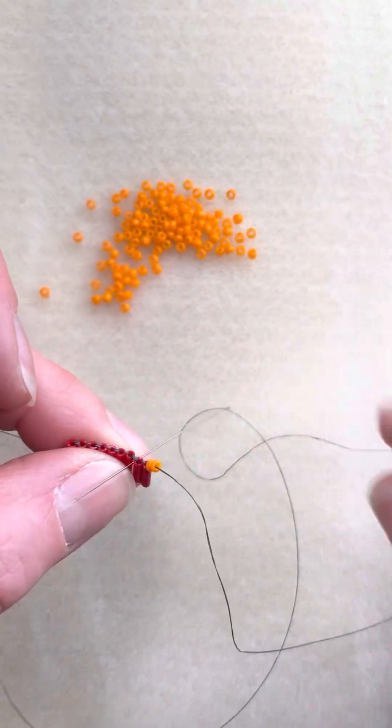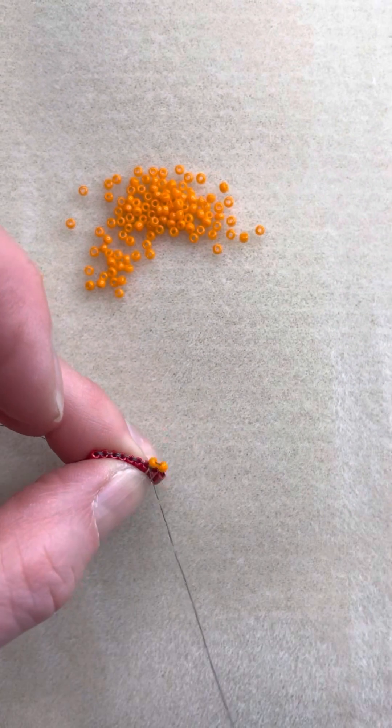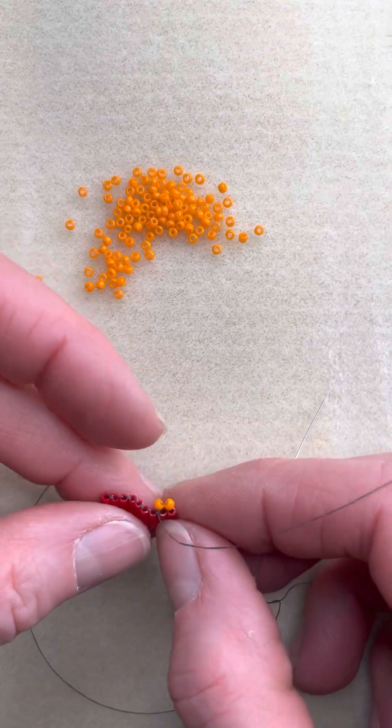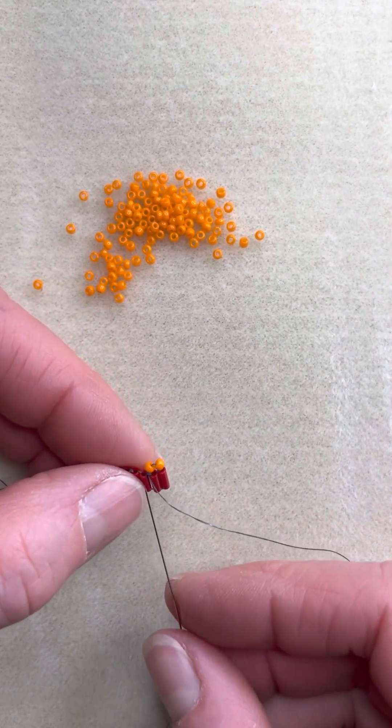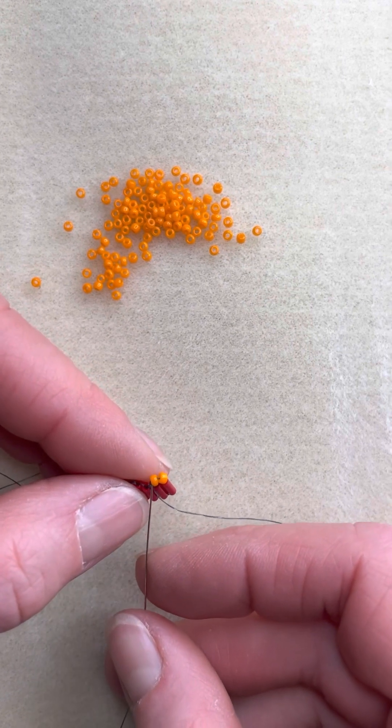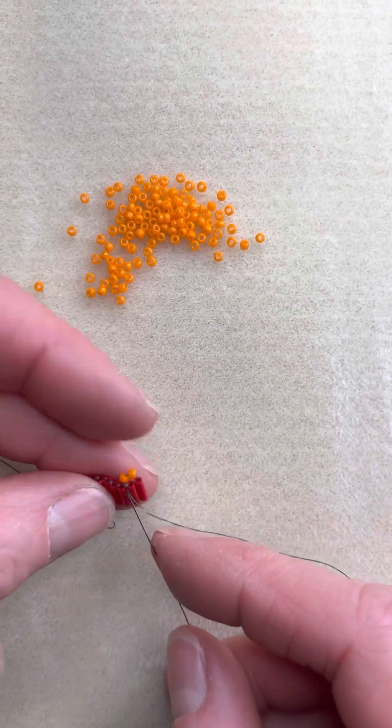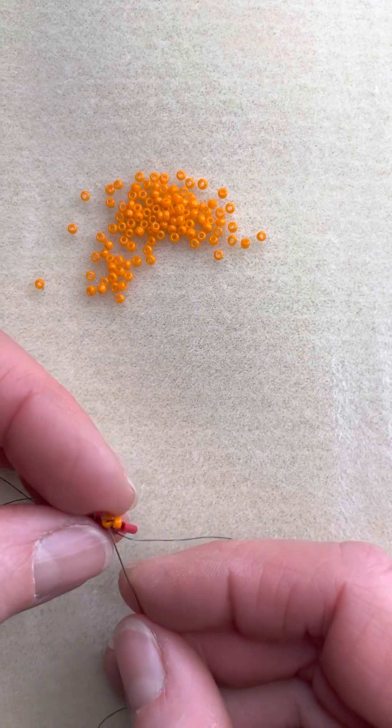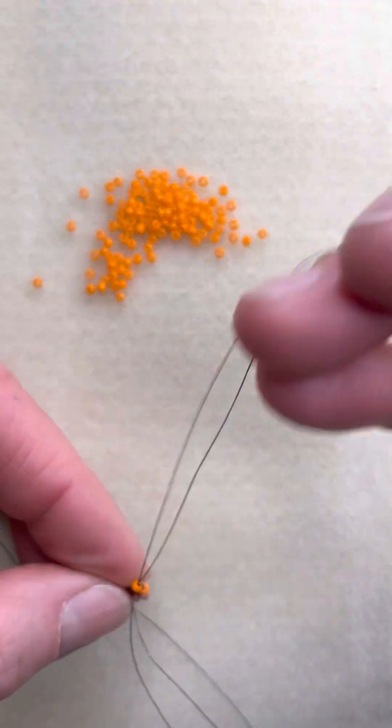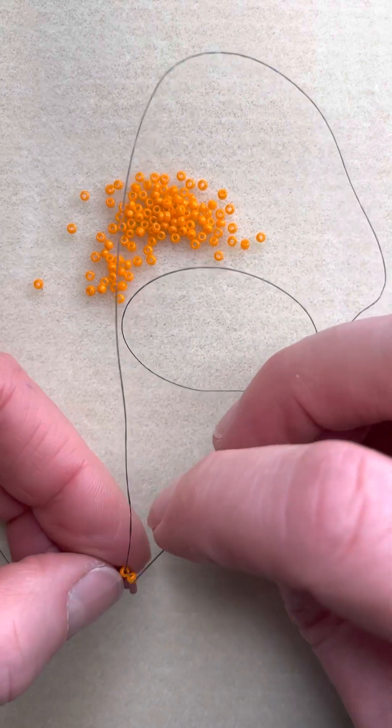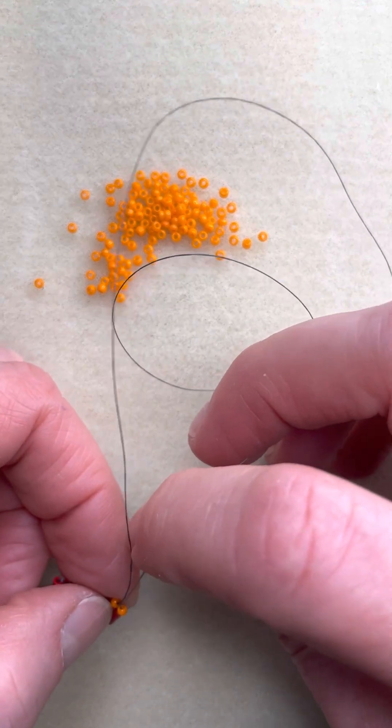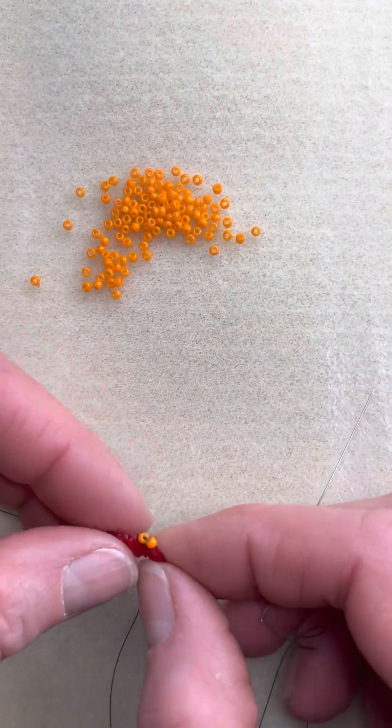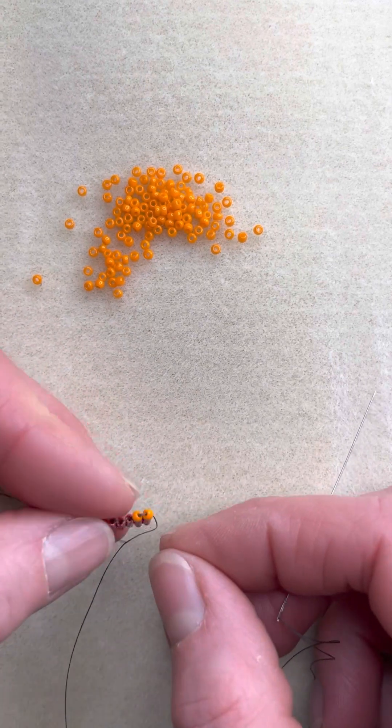We pull our needle through and our two seed beads will plop on top. Not very neat at this point but we're going to fix that. We take our needle now and go up the second bead, and then down our first bead. This is securing them onto the row.